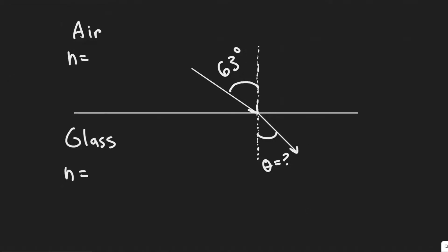Okay, so in this problem we're told a flashlight beam strikes the surface of a pane of glass, n equals 1.56, at a 63 degree angle to the normal. What is the angle of refraction?